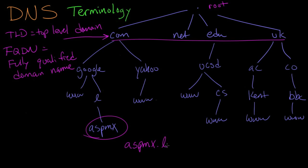ASPMX.l.google.com dot. This last dot here comes from the root of the DNS hierarchy. So when we spell out the entire domain name, starting from the bottom and working our way all the way to the top, we use each one of these names as we go up the tree, and then we also